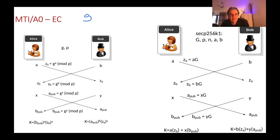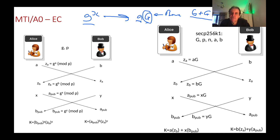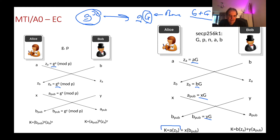Now let's convert this into an elliptic curve method. Rather than having discrete logs, we convert that into what's called a multiplicative or scalar operation on a point. With elliptic curve, rather than having a generator value G, we have a point on the elliptic curve called the base point. Then we perform an add operation, adding the point G n times — in this case A times — to give us A times G. So it becomes a multiple scalar operation rather than an exponential operation. Rather than G to the power of A we take A times G, and rather than G to the power of B we take B times G.